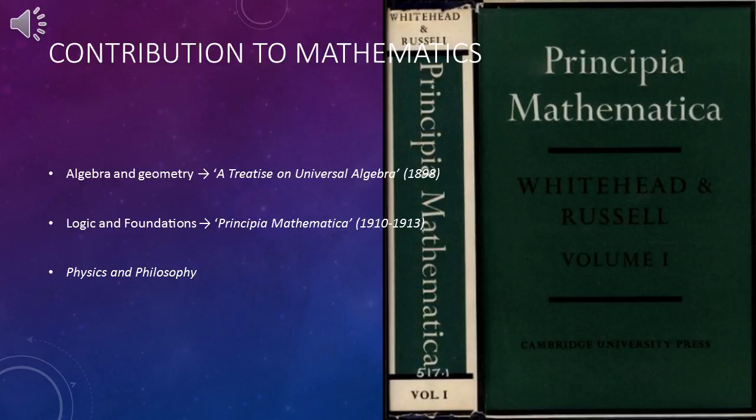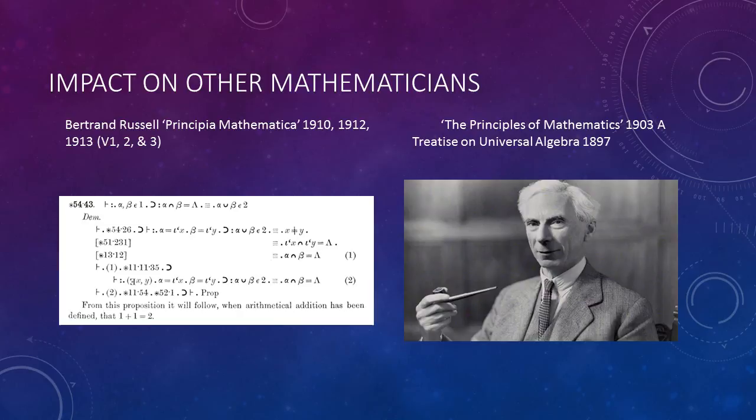To provide an example, Whitehead and Russell were the first to define a series as a set of terms having the properties of being asymmetrical, transitive, and connected.